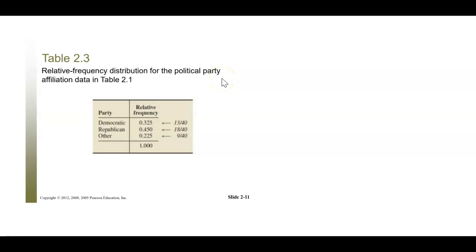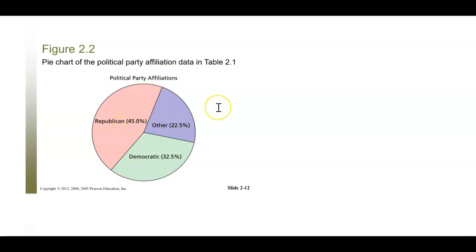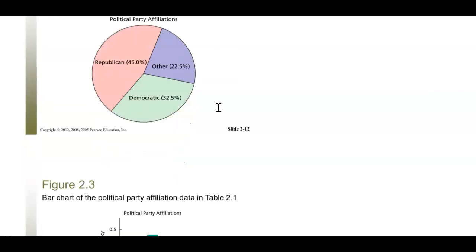There's a lot we can do with data once we get relative frequencies. Often when you see qualitative data represented you may see a pie chart. The percents are taken — 45% Republican, 32.5% Democrat — and represented as portions of a circle. The 45% is almost half the circle.